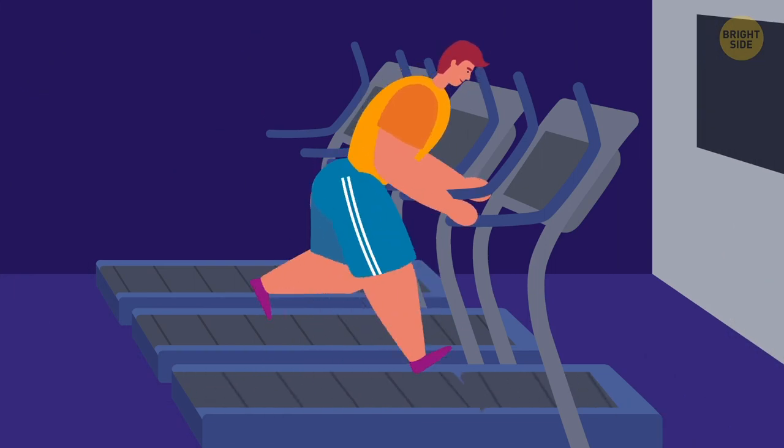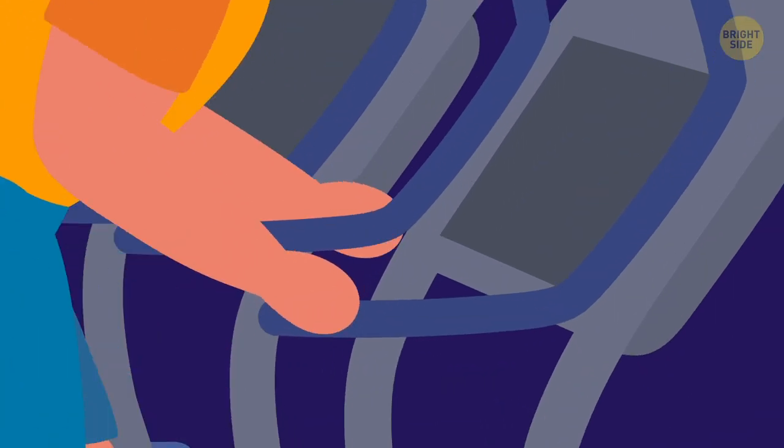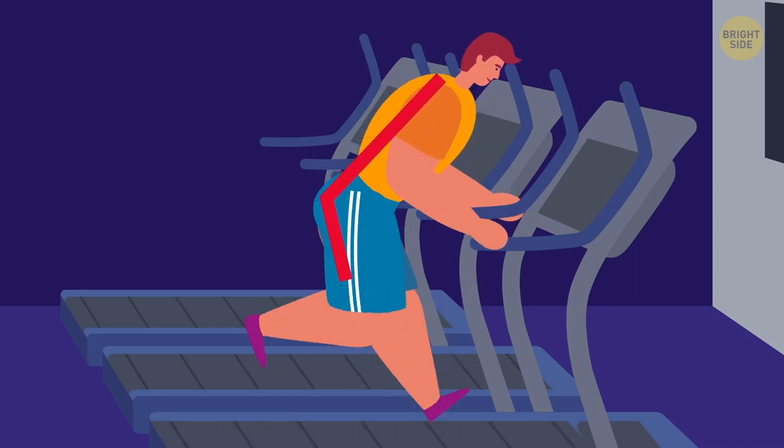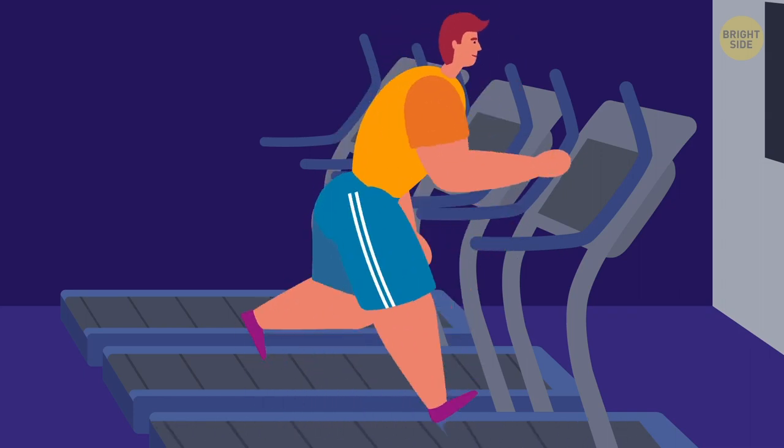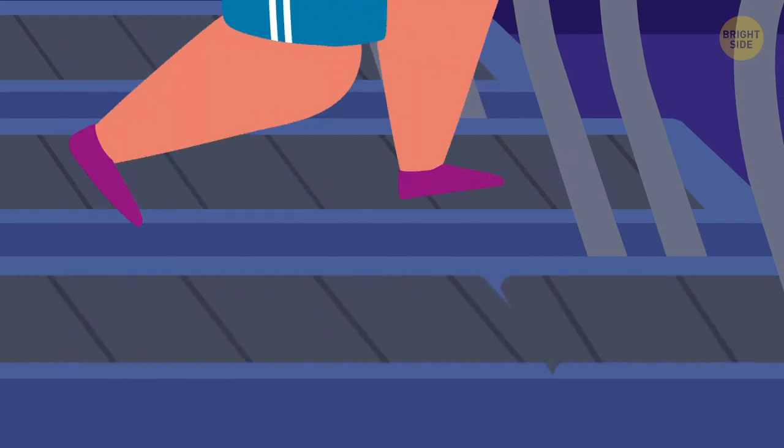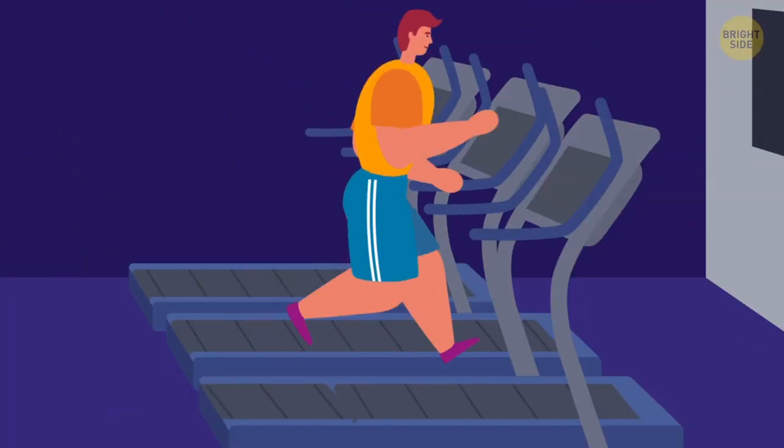Avoid running on the treadmill while holding onto the handrails. It's not only ineffective, but it also messes up your posture. If you have problems with letting go of the rails, it may mean that your speed is too high. Take it down a few notches and work your way up at a safe pace.